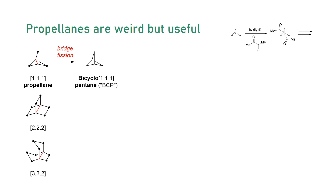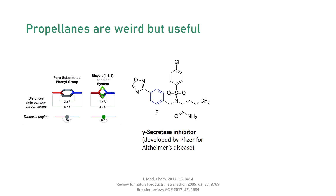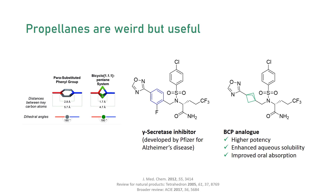This BCP group is employed in drug discovery as a bioisostere or a mimic for aryl rings, altering physico-chemical characteristics that might be favorable for optimization of a medicinal lead compound. A prime example is this investigational drug from Pfizer that saw an improved potency and enhanced pharmacological profile upon substitution of the phenyl ring with a BCP group.